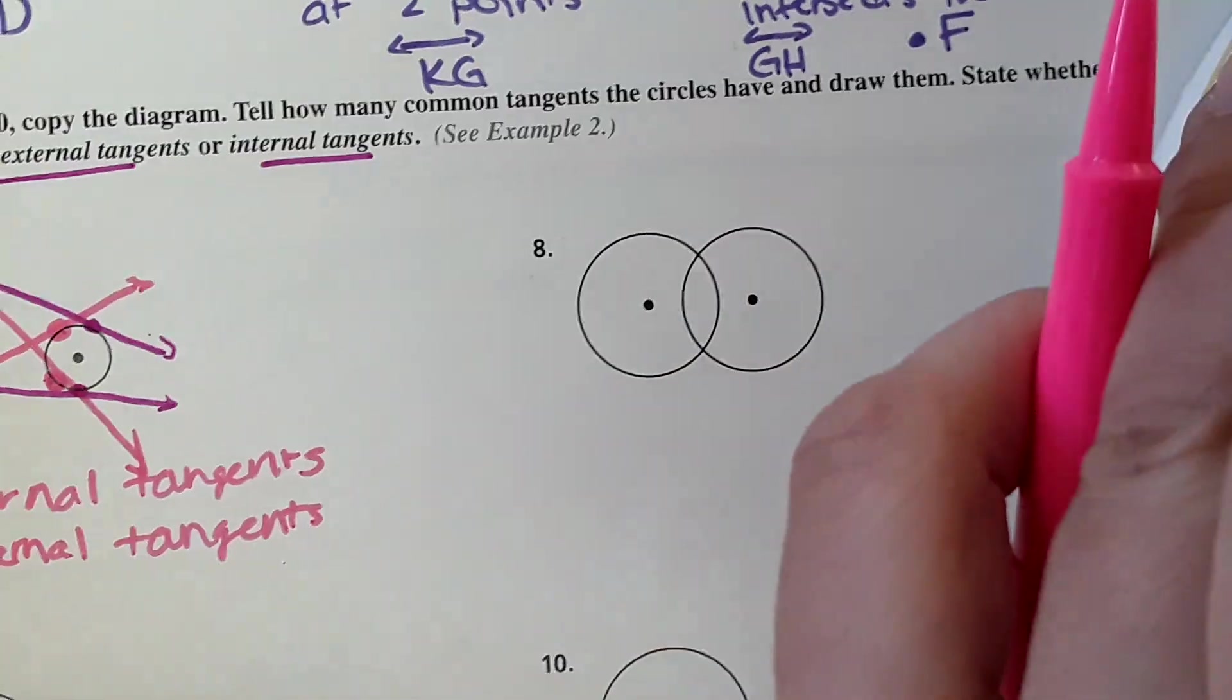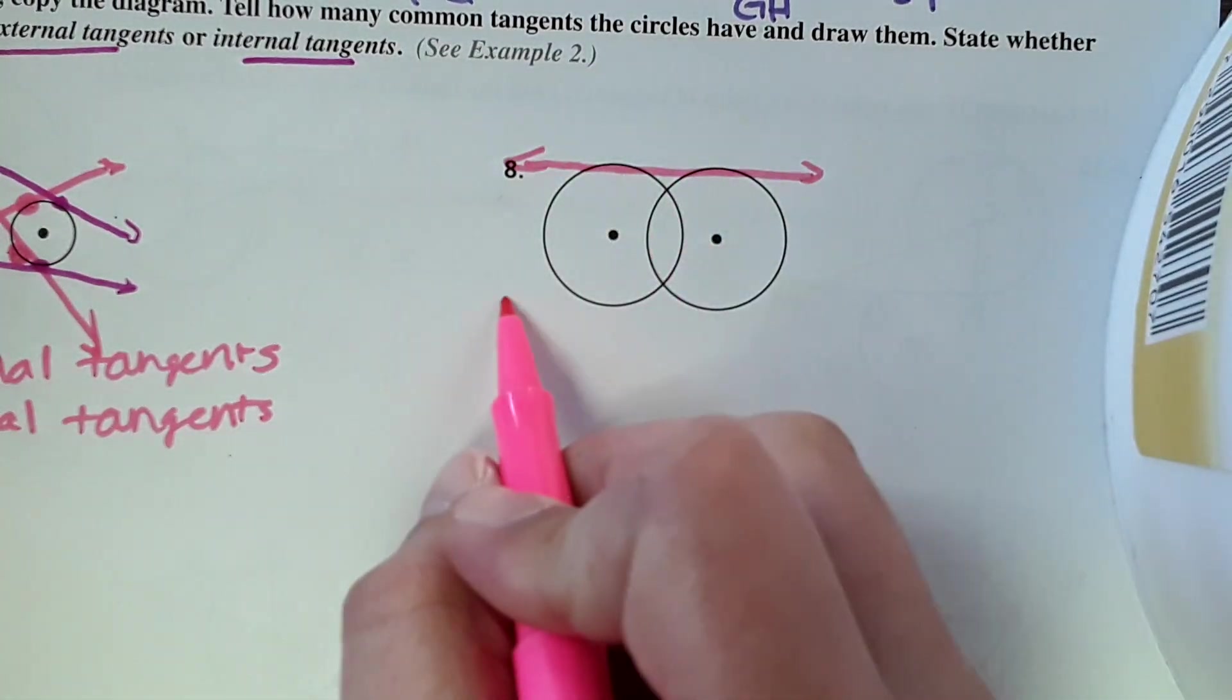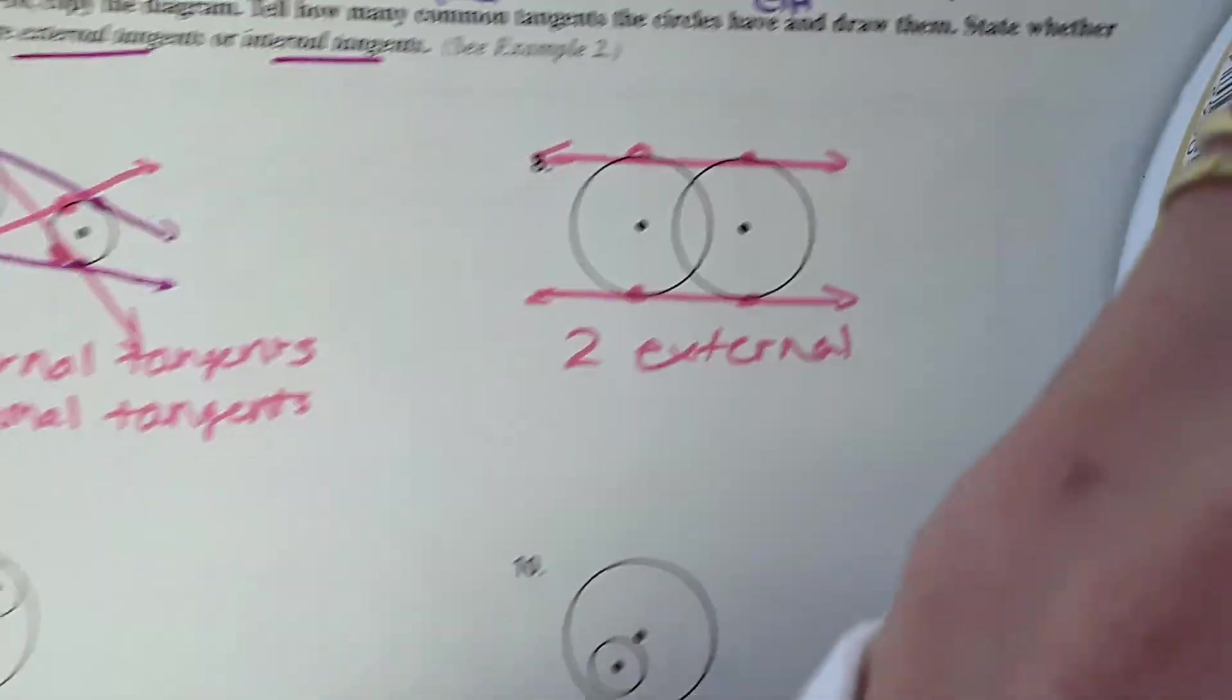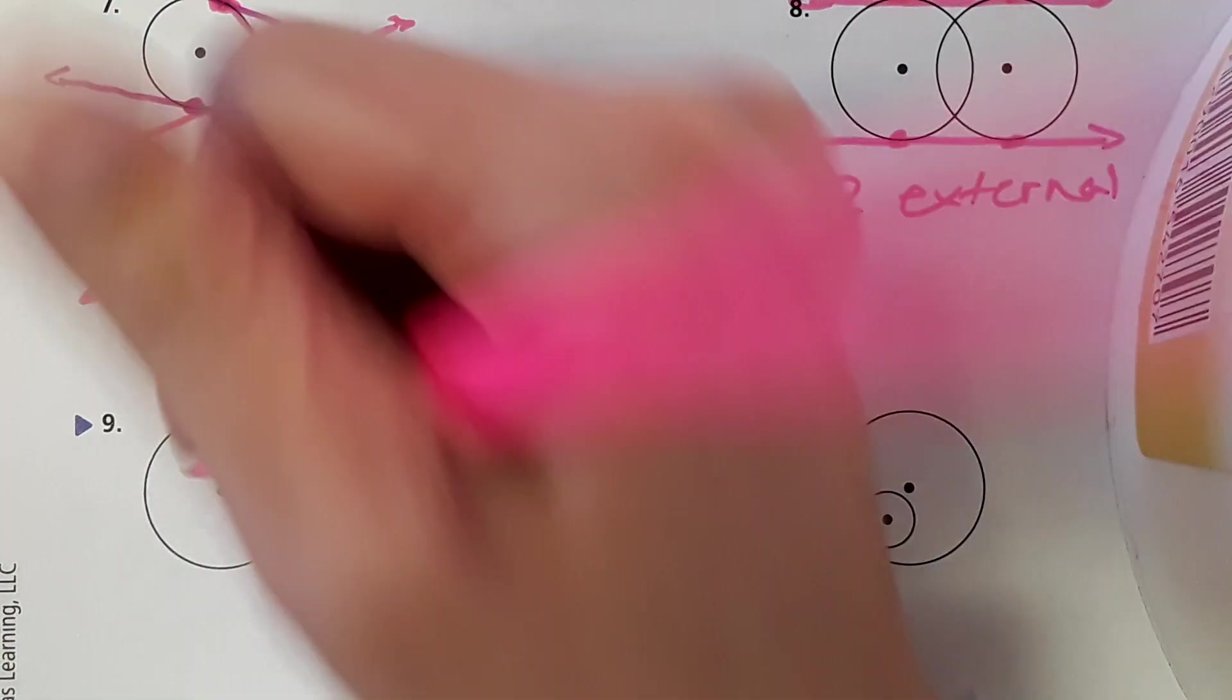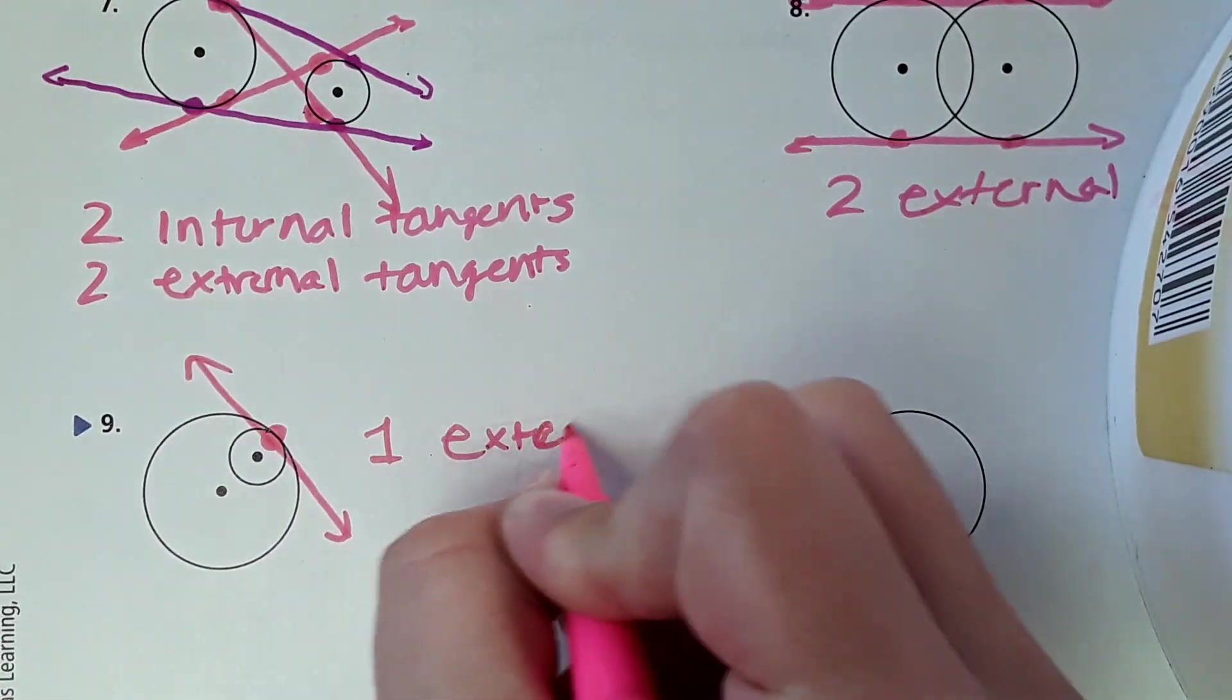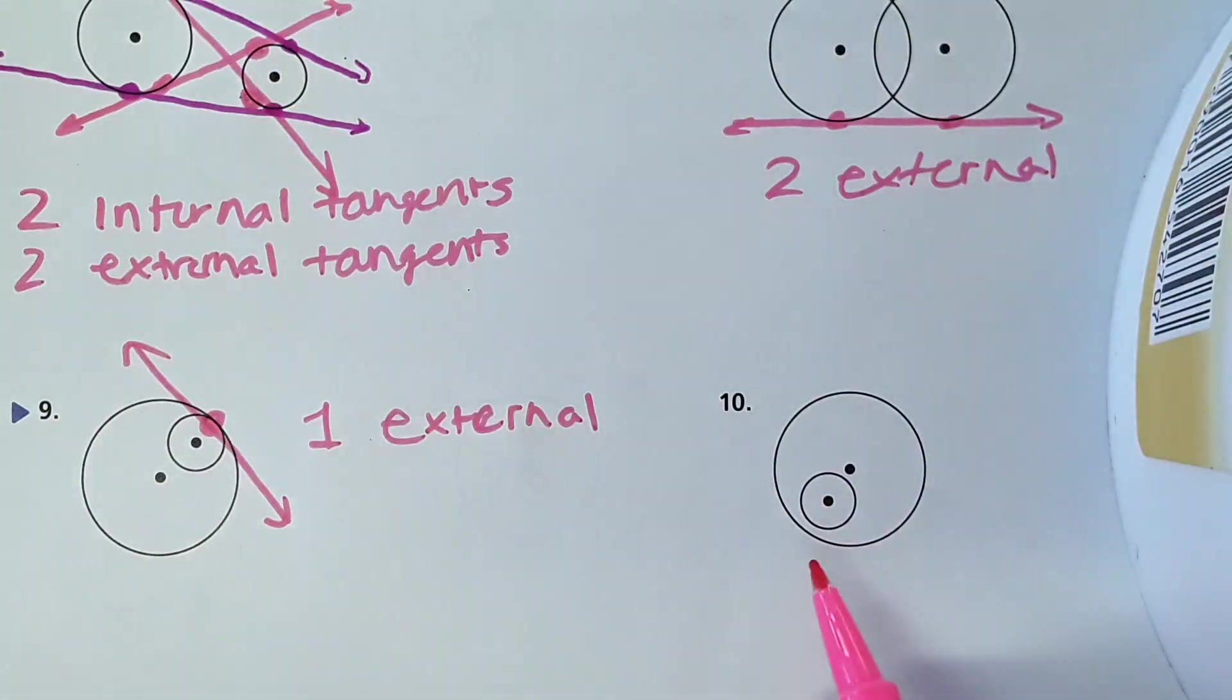Number eight, the tangent lines that would hit both—there's one right here and one right here. So it hits here and here, here and here. So we have two external. And then for number nine, you could draw a line right here that would hit both. So one external. And then for number ten, there's no line that you could draw that would only intersect the side once. So this is zero.